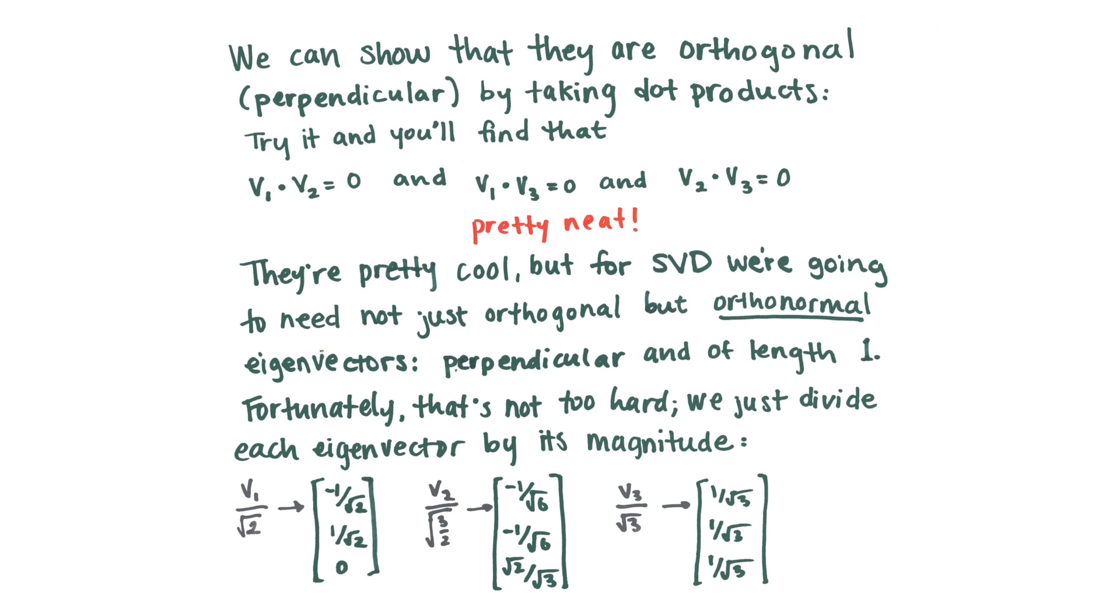And if you don't believe us, we'll show you. So we can show that by taking dot products. And if you know about dot products, orthogonal vectors will have a dot product of zero. And so we've done it here. V1 dot V2 is zero, V1 dot V3 is zero, and V2 dot V3 is zero. So they're all orthogonal to each other, which is pretty cool, because that's a very special sort of basis that has three orthogonal eigenvectors.